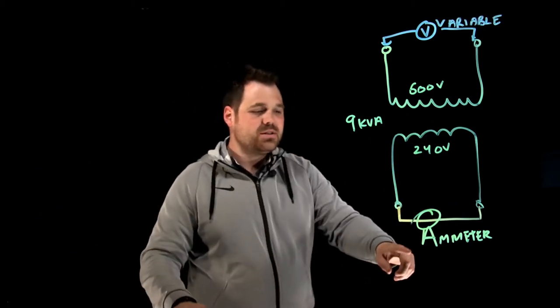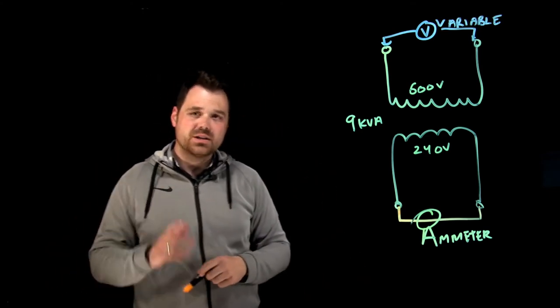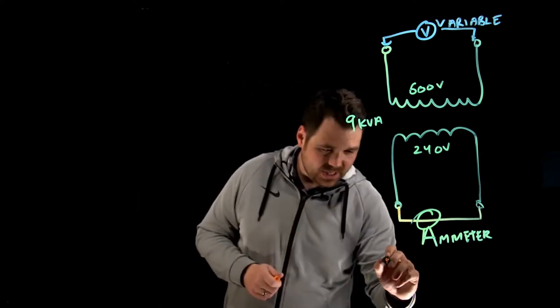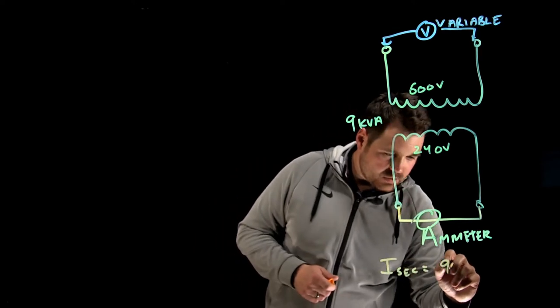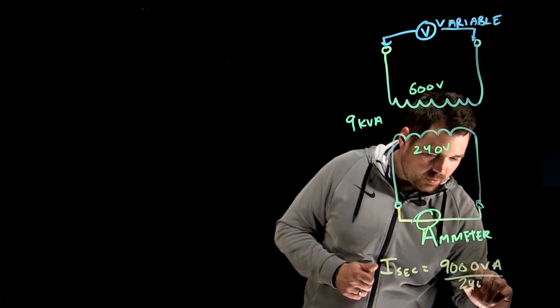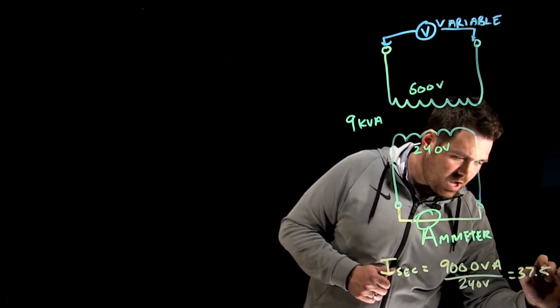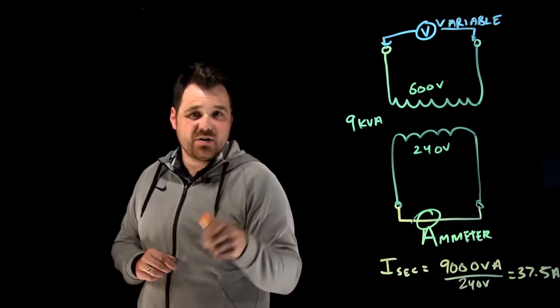So quick reminder, how do we calculate that? Well, I have my secondary would be 9,000 VA divided by 240 volts. So in this case, it gives us 37.5 amps. That's my rated secondary current.